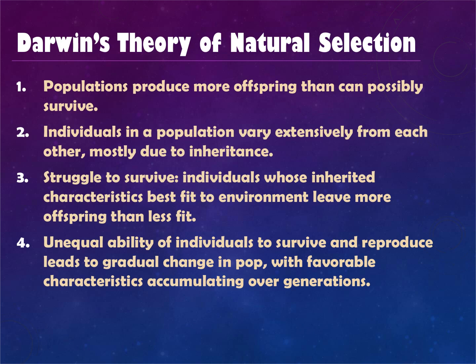Darwin's theory is wrapped up in four key postulates: first, populations produce more offspring than can possibly survive — the Malthus influence of overpopulation; second, individuals in a population vary extensively, mostly due to inheritance; third, there must be some struggle to survive, where individuals with better characteristics are better suited to the environment and will survive while others die; and fourth, there must be unequal ability to survive and reproduce, meaning only the best survive, resulting in gradual change toward the better trait.